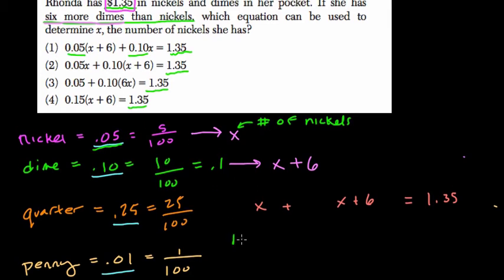Well, it would be one times 0.05. If I had two nickels, it would be two times 0.05, and so forth. Same thing with dimes, except dimes we're thinking of in terms of nickels, so we'll get that in a second.